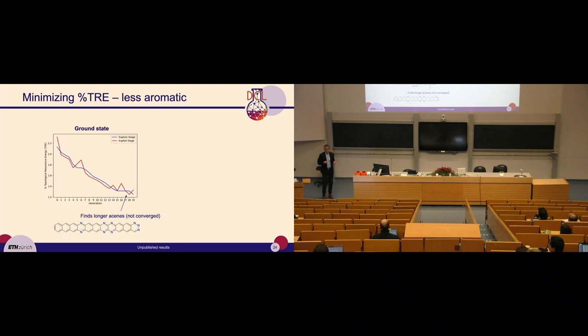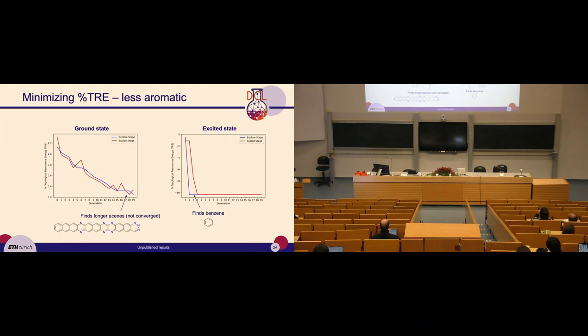When we minimize the TRE — finding less aromatic or anti-aromatic molecules — in the ground state we quickly recover linear acenes, which are well-known to be not very aromatic. In the excited state, we again quickly find benzene, and benzene is also known to be the most anti-aromatic molecule in the excited state.